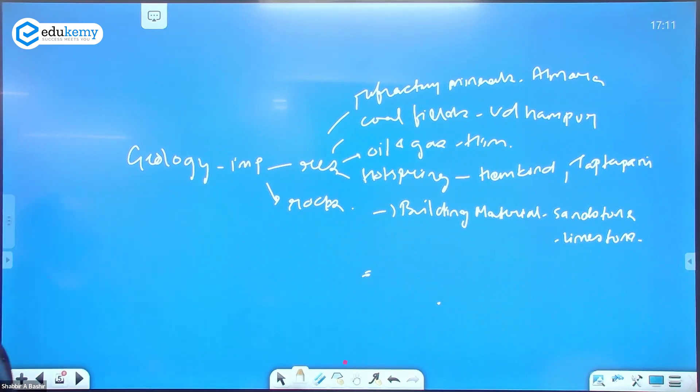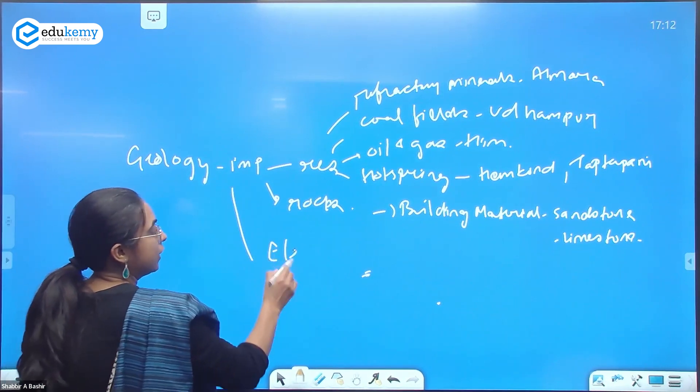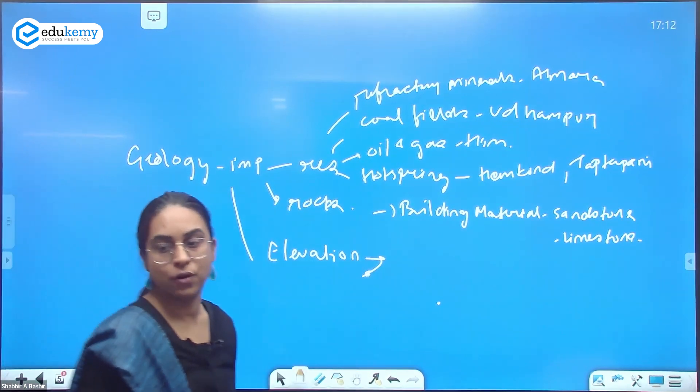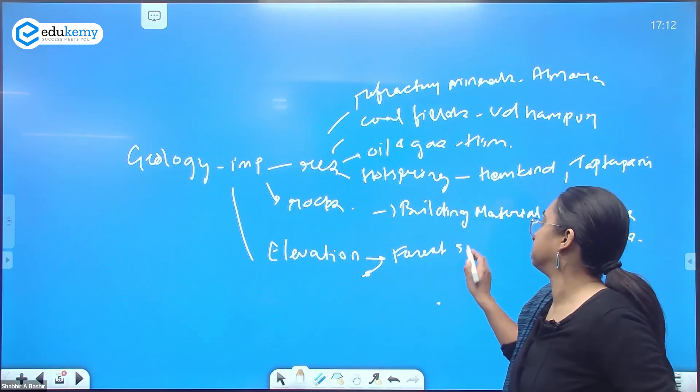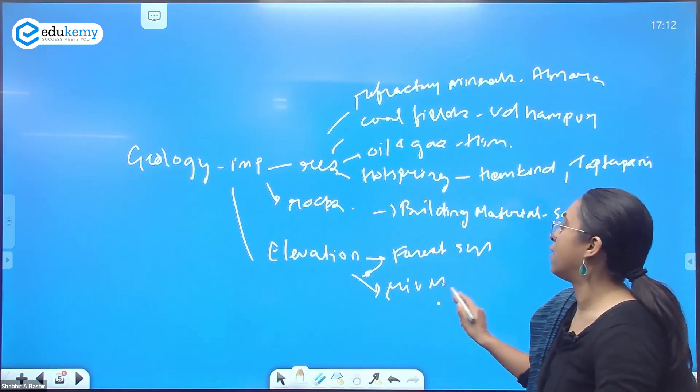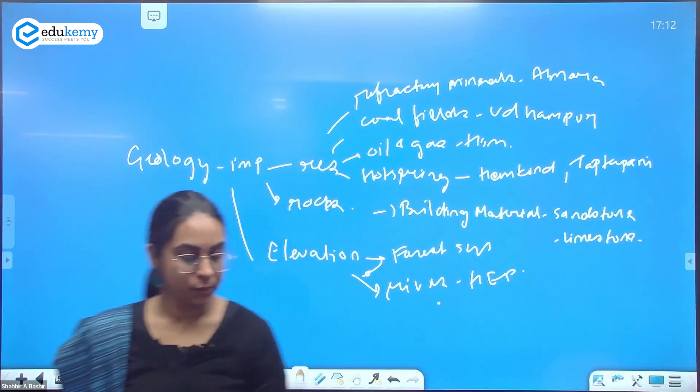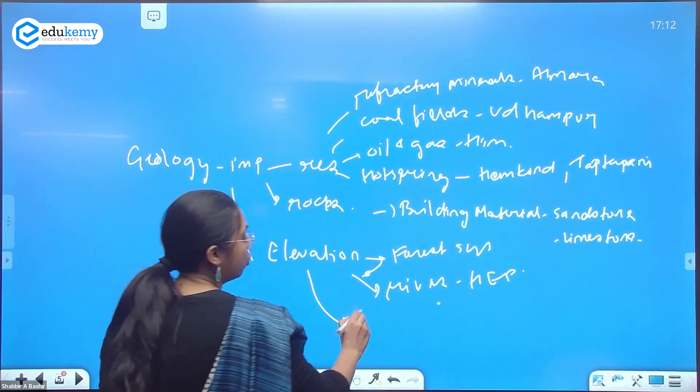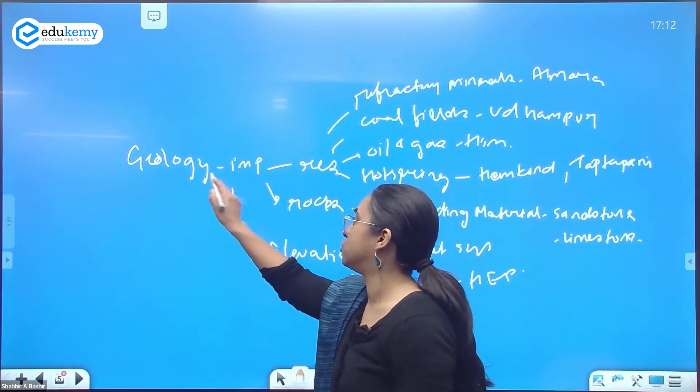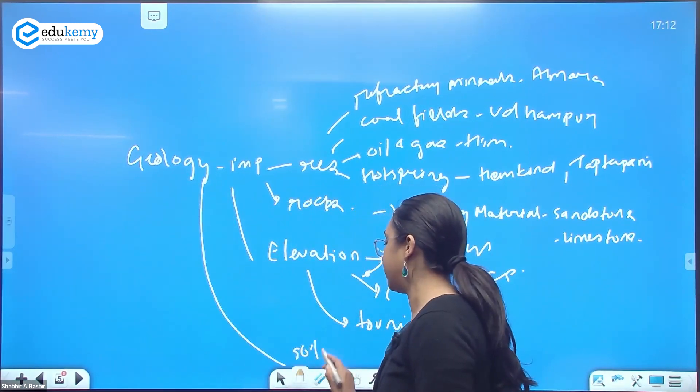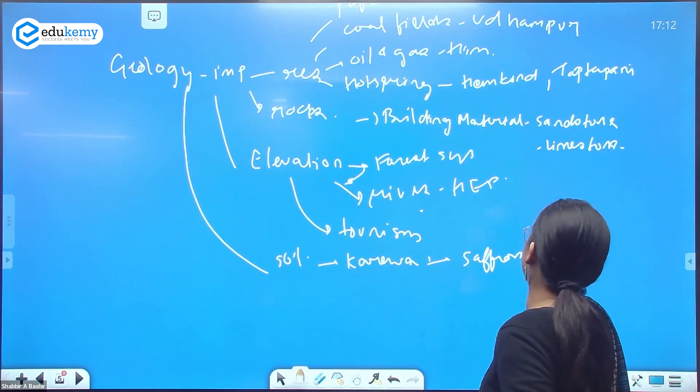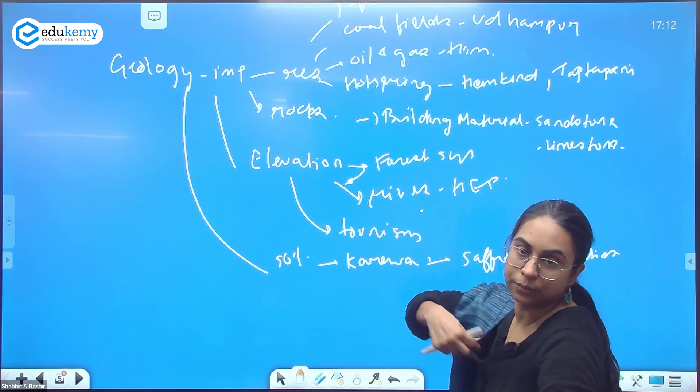As there is elevation, because of the elevation you can also have forest, different forest systems. Because of the elevation you can have rivers with high HEP potential. Because of the elevation you can have good tourism. With respect to geology, your soil gets affected. As your soil gets affected, an example is Karewa. In Karewa you have saffron cultivation. So this was about how geology is affecting the importance.